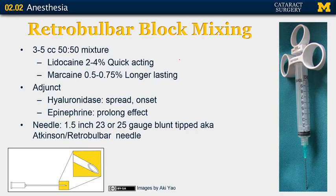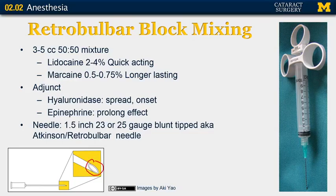To prepare the retrobulbar block, we generally use a 50-50 mixture of lidocaine 2–4%, which is quick-acting, and marcaine 0.5–0.75%, which is longer lasting. You can draw up about 5 cc's of this. Occasionally, adjunctive medications are used such as hyaluronidase, which promotes spread and quickens onset, or epinephrine, which is intended to prolong the effect. A special needle is used — it's 1.5 inches, 23 or 25 gauge, and has a blunt tip to avoid globe perforation. This needle is also called an Atkinson or retrobulbar needle.